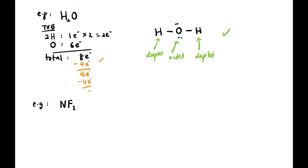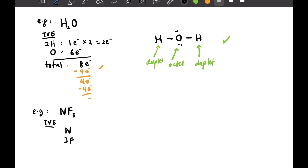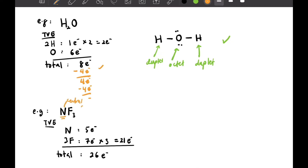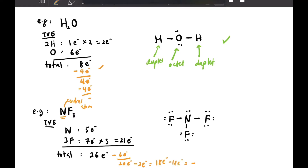Next example: NF₃. We calculate TVE — one nitrogen has five valence electrons, and three fluorine atoms each have seven, so 21 plus 5 gives 26 total electrons. We draw the draft with nitrogen as the central atom, form three bonds using six electrons, leaving 20. We place six electrons on each fluorine (18 total) and two on nitrogen. Checking: nitrogen is octet (1–8), and all three fluorine atoms are octet. All atoms are octet.